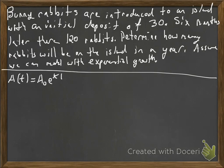Let's determine how many rabbits there will be on the island in a year. Assume we can model with exponential growth, so we can use our exponential equation, A(t) equals A₀e^(kt). Now, the time appears to me to probably be in months, because they say six months later. We could use time in years, we would say time is a half. That's certainly a possibility, but let's use months here.